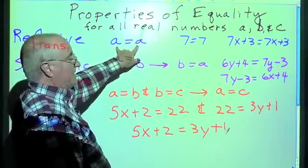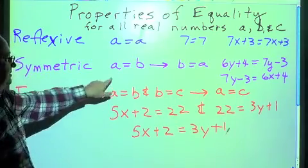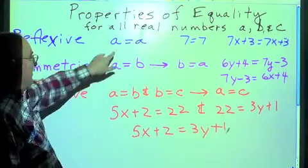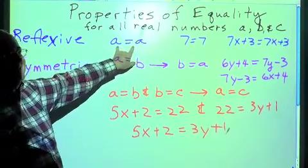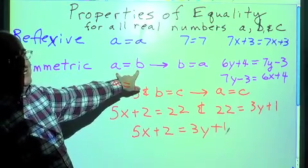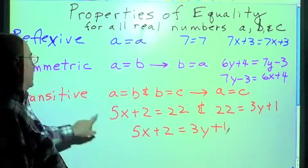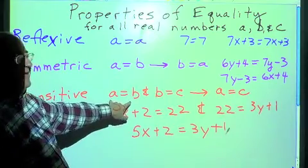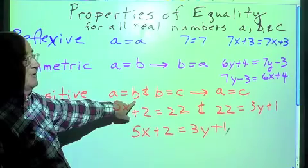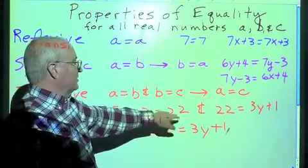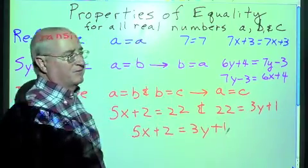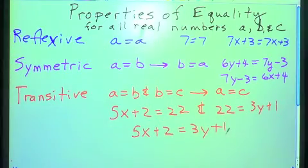Reflexive, something is equal to itself. Symmetric, if something is equal to something else, then something else is equal to that. Now look at this: as I look in the mirror, I see myself, that's reflexive. Symmetric, identical twins look like each other. Down here, if I have identical triplets, and triplet one looks like triplet two, and triplet two looks like triplet three, then triplet one looks like triplet three. That's all we're seeing here.